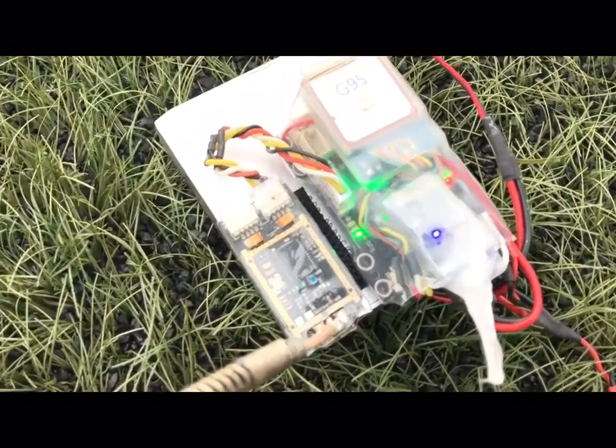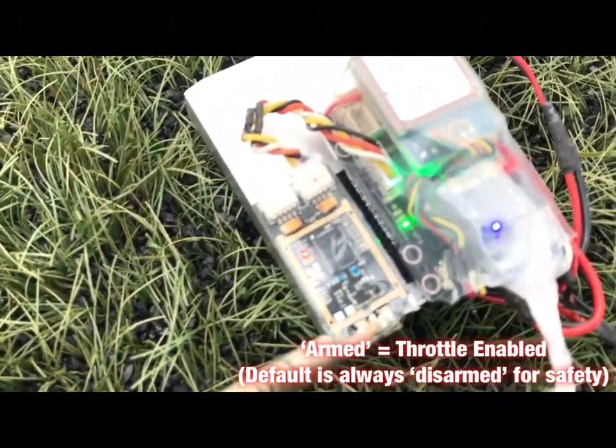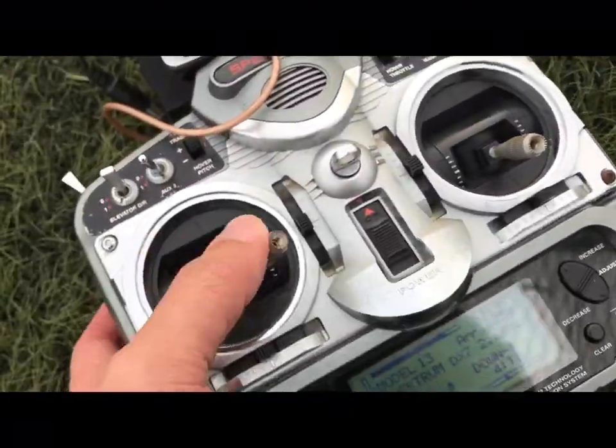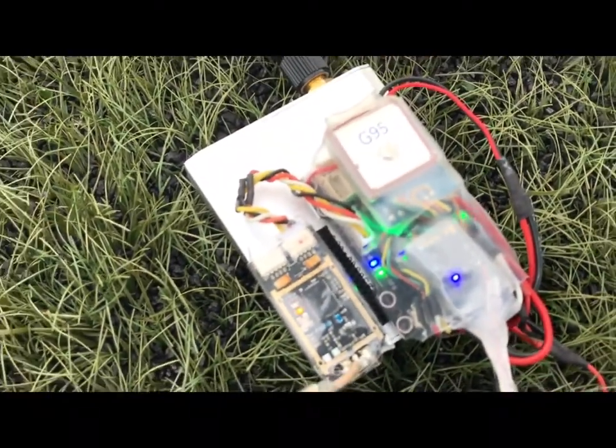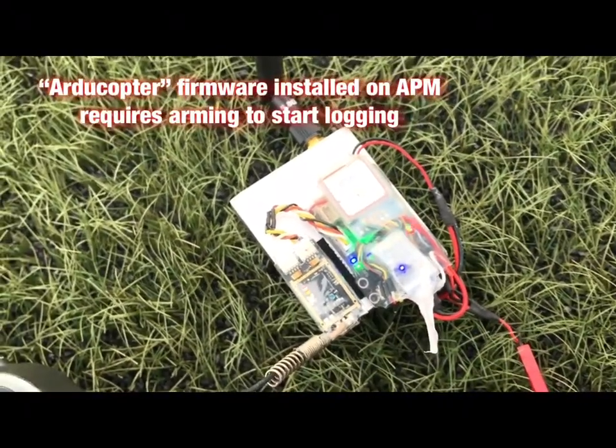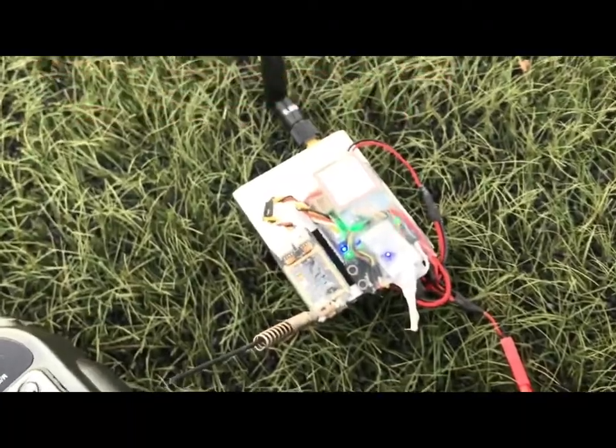Right now the APM unit has not been armed, as you can see from the blinking blue light over here. Now I'm gonna arm it with my radio, and it should turn solid blue. Okay, it's armed now, which means that it has started recording the logs. Let's plot the antenna pattern.